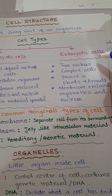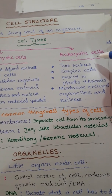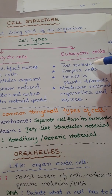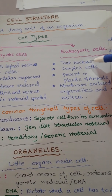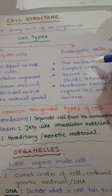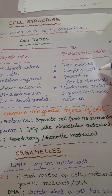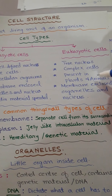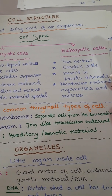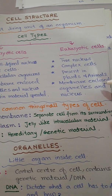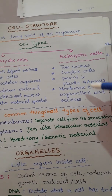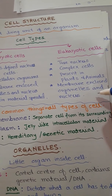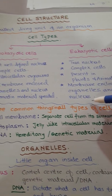In eukaryotic cells, there is a true nucleus — 'eukaryote' means containing a true nucleus. These are complex and well-advanced cells present in plants, animals, and multicellular organisms. They contain membrane-enclosed organelles and a membrane-enclosed nucleus.